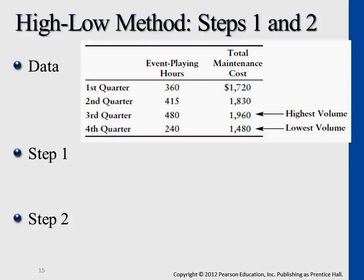Pick the two data points, calculate the slope first, then plug the slope into the variable cost unit — 240 hours multiplied by $2 gives total variable cost of $480. The total cost for the fourth quarter is $1,480. Since mixed cost equals fixed plus variable, fixed cost equals $1,480 minus $480, which is $1,000.